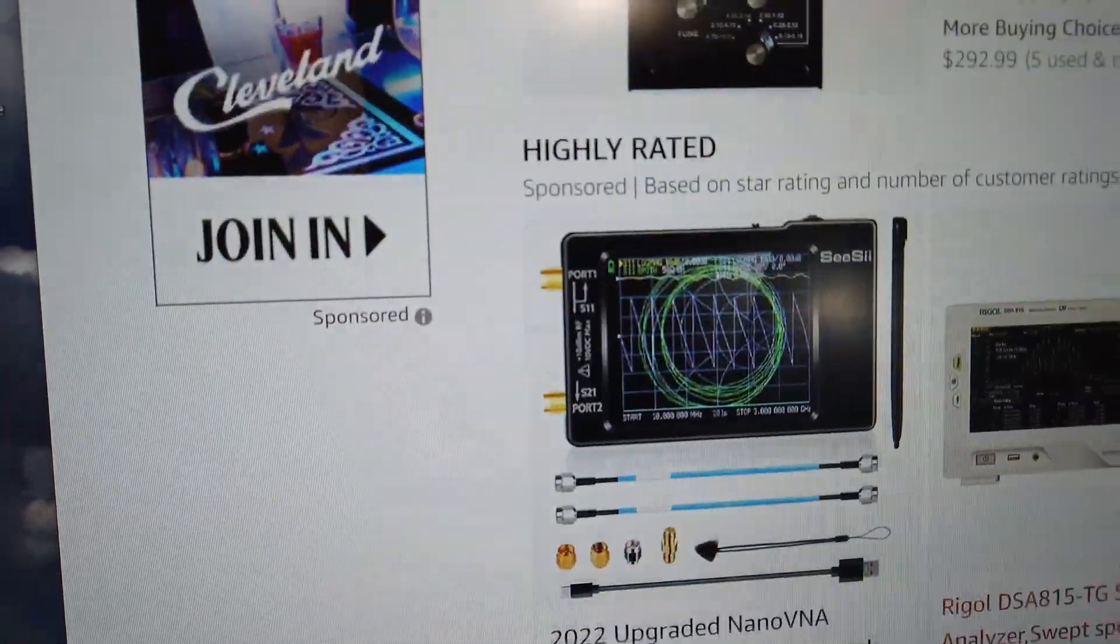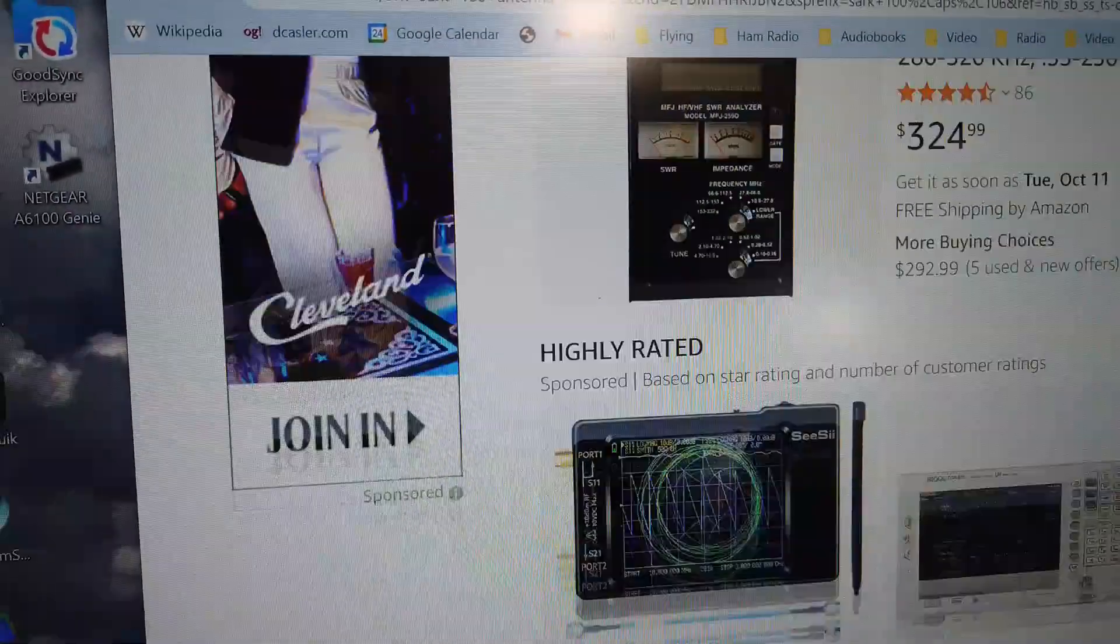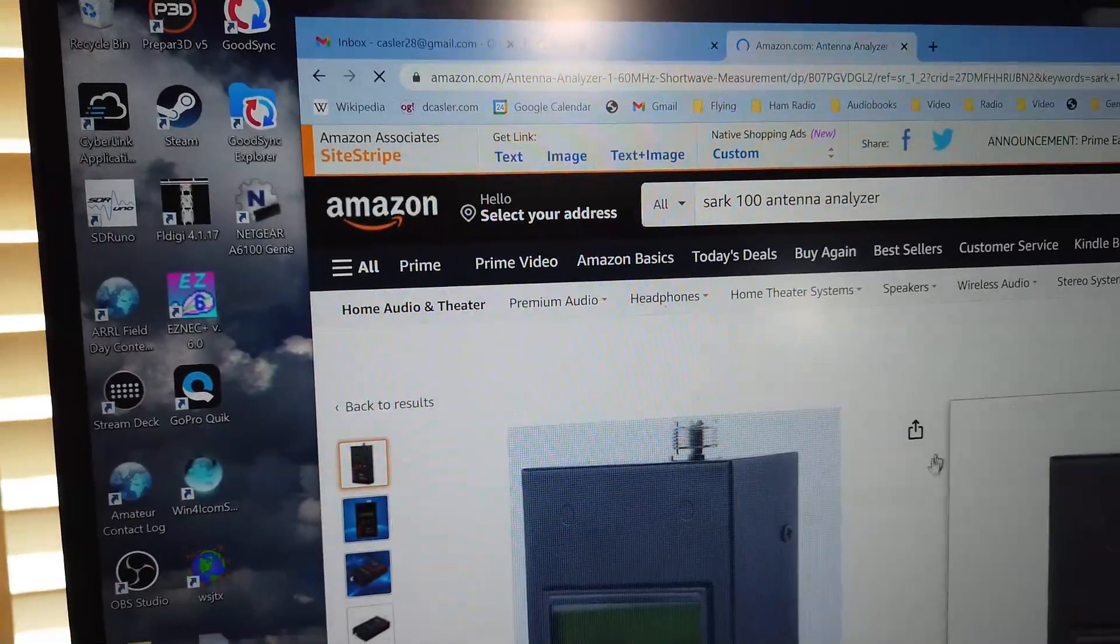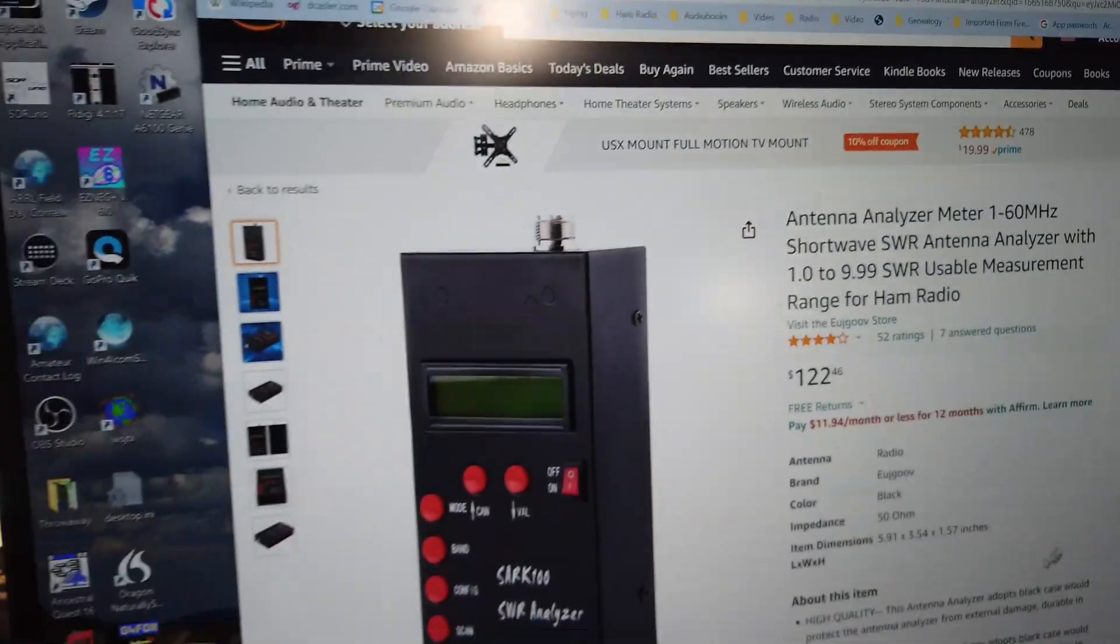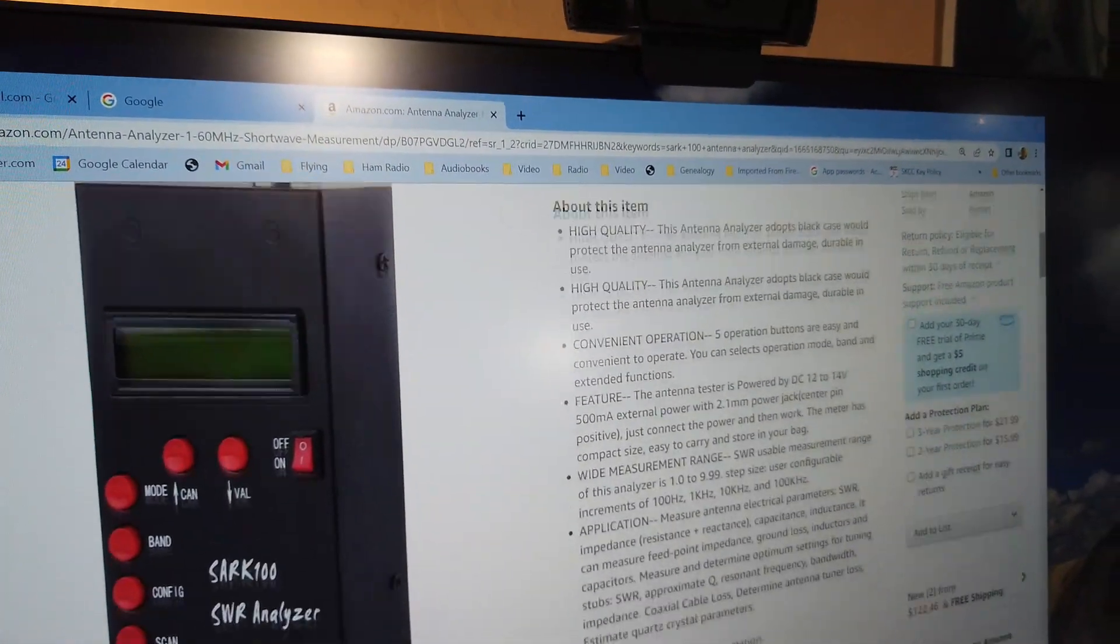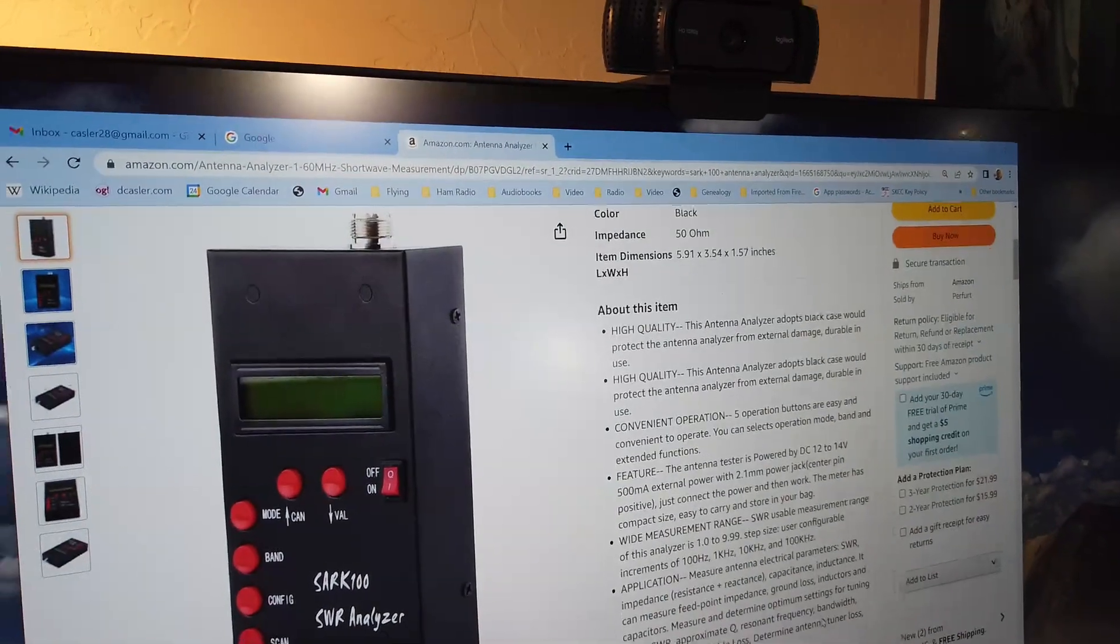Now, whereas the MFJ-259D, which does about the same thing, is $324. So you see, you can save a lot of money on this thing. But let's just go to this page right here. They tell you all about it.